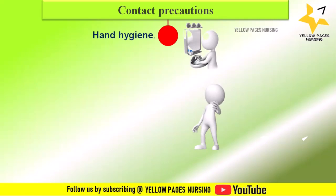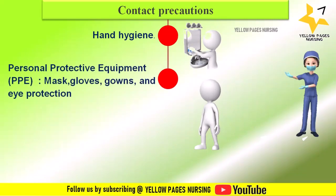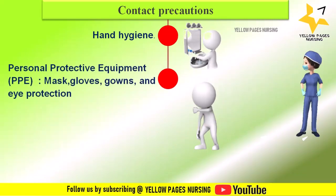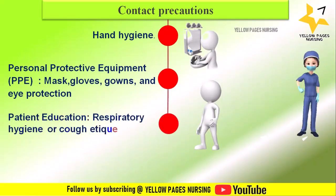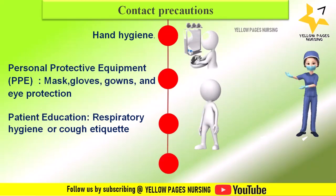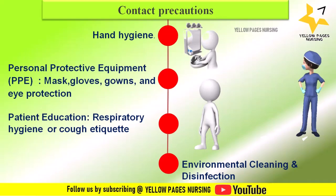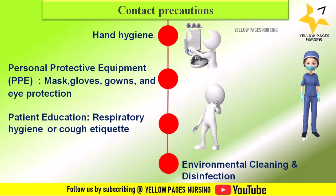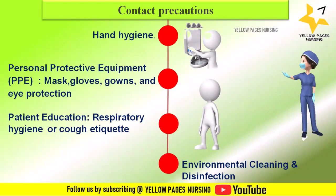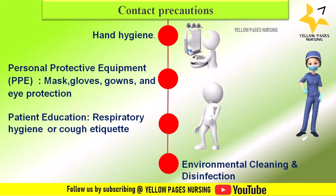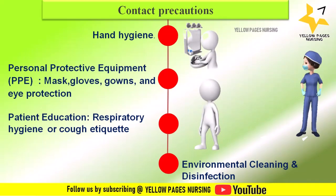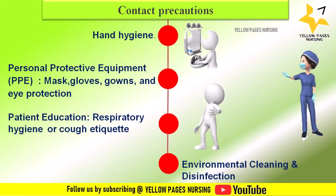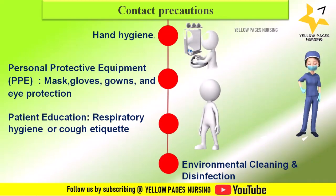Next, let's discuss contact precautions. These include hand hygiene, personal protective equipment (PPE) such as masks, gloves, gowns, and eye protection, patient education, respiratory hygiene or cough etiquette, and environmental cleaning and disinfection. Hand hygiene is the foundation of infection control. Nurses should perform hand washing with soap and water or use alcohol-based hand sanitizers before and after every patient contact, especially when there is a risk of contact with body fluids or contaminated surfaces.